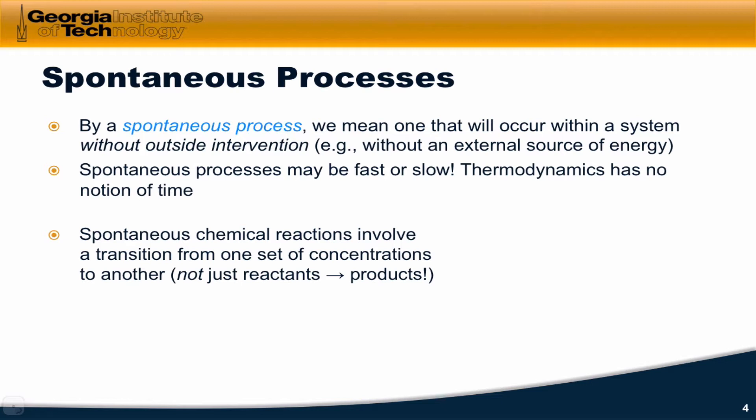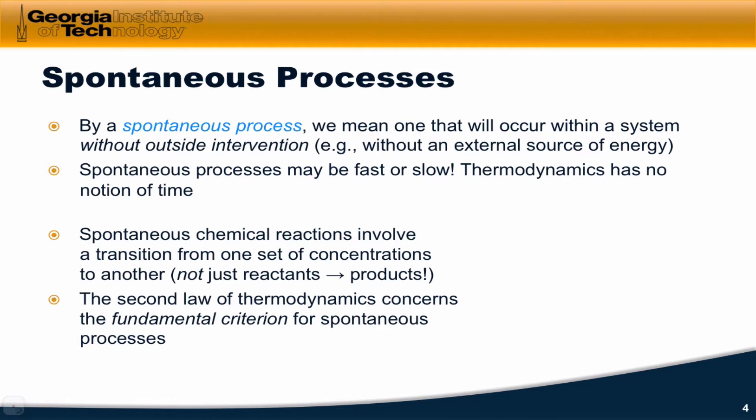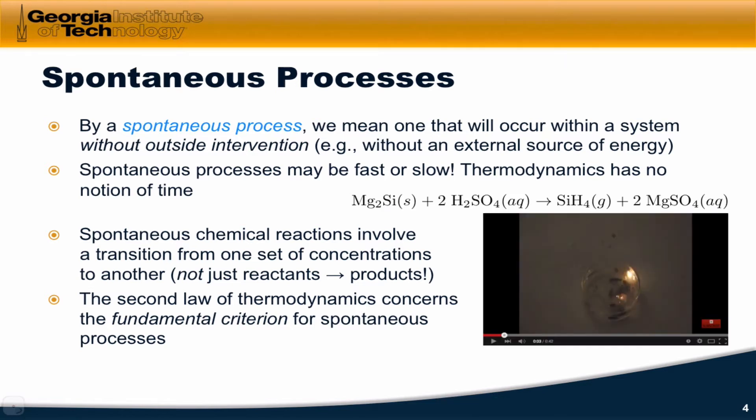Complete conversion of reactants to products is never a spontaneous process — 99.9% or 99.99% are achievable in some cases, but we want to understand exactly what those concentrations are. To show you an example of a spontaneous process, let's look at the reaction of Mg2Si with sulfuric acid in aqueous solution. Notice that as soon as the reactants are brought into contact, the reaction goes immediately without intervention from the outside world, very vigorously and very quickly.